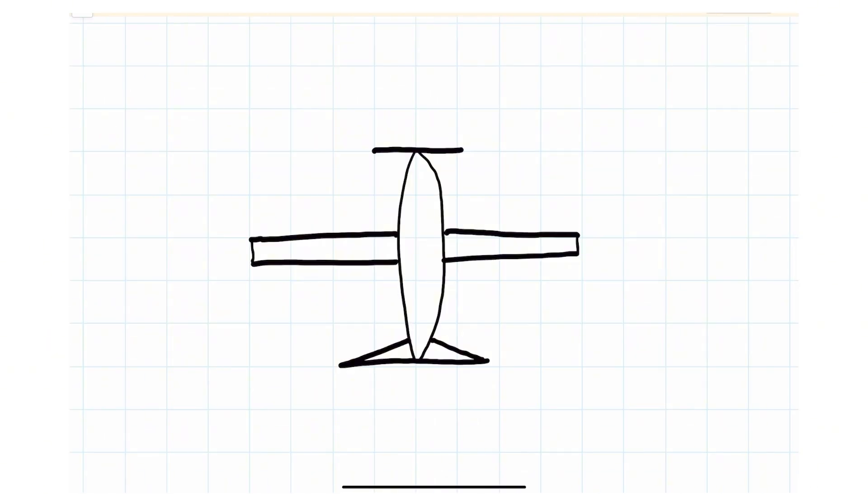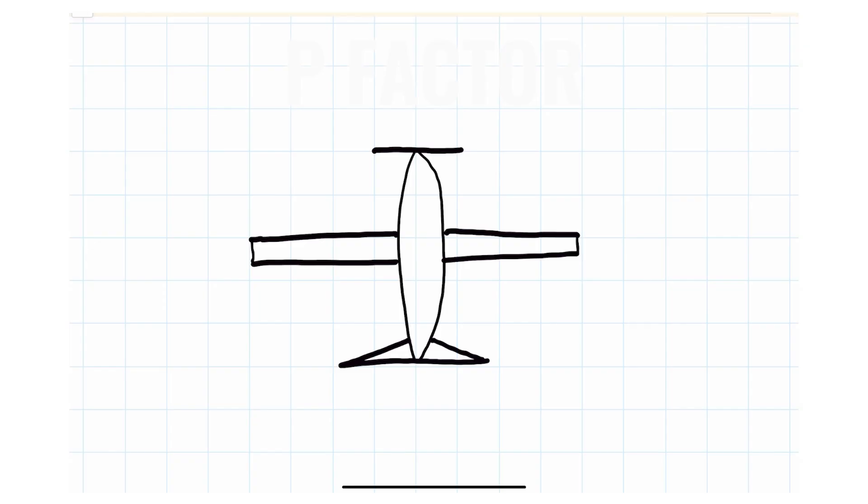The third turning tendency given to us by the FAA and the PHAC is actually called asymmetric disc loading, also known as P-factor. The downward blade on the normal, we haven't put an angle of attack on this yet. So here's an airplane propeller with both sides pulling. We have both propellers, the downward and the upward blade that's creating thrust.